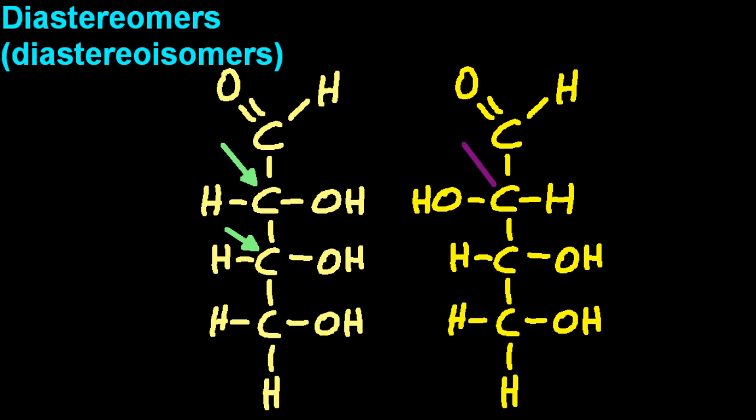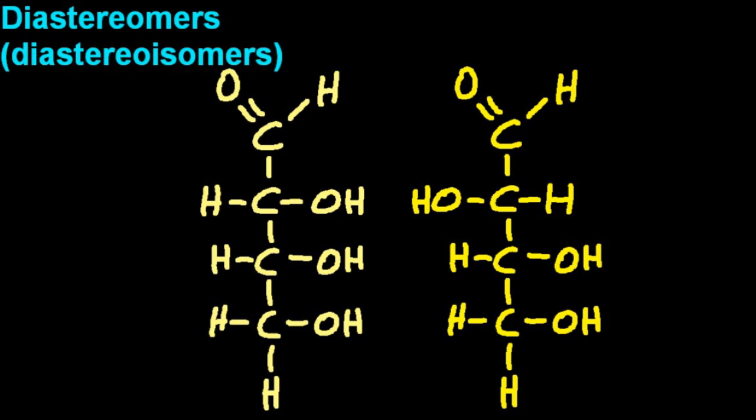Those are the two chiral carbons. Now what about the carbons at the top? They're not chiral. They only have three bonds. You need four for chiral. And what about the carbons at the bottom? There's four bonds on them, but with two hydrogens there have to be four different branches, so they aren't chiral either.